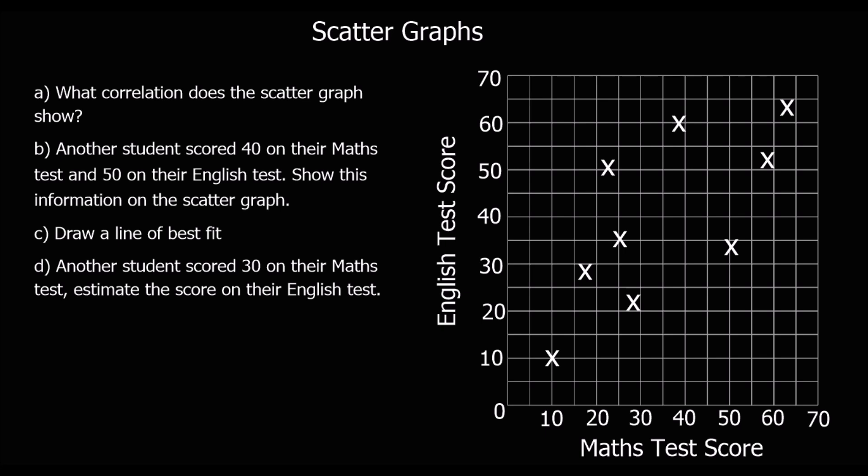The correlation here is positive — as the maths score increases, the English score is increasing as well. This is a good example of correlation not being causation. It's unlikely the maths test score causes the English test score to increase. There's almost certainly an underlying cause, like effort — how much effort someone puts into the tests. If someone puts more effort into their maths they're more likely to put effort into English, but it doesn't cause it. So there is correlation, but there's probably not causation.